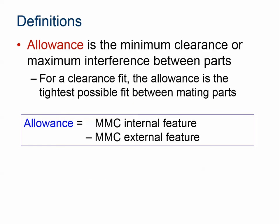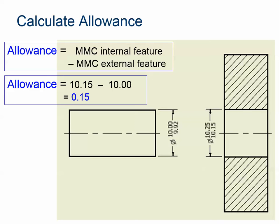Allowance is a numerical value that allows you to determine whether you've got clearance or interference, and also how much. A really easy way to calculate this is to take the MMC of the internal feature — the hole — and subtract the MMC of the external feature. Here's an example using one of the pictures from before. The internal feature is the hole on the right. Since it's a hole, we use the MMC — the lower limit — which is 10.15. Then subtract the MMC of the external feature, the rod, which uses the upper limit of 10.00. That gives us a positive 0.15. A positive number indicates a clearance.